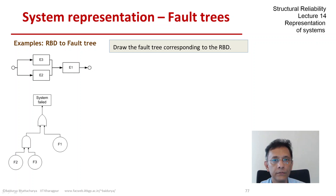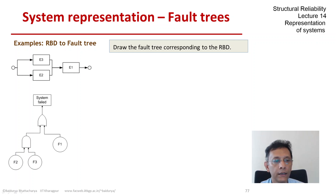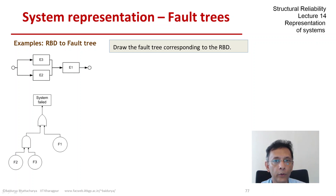So the top event is the system fails, and again because they are arranged in series, we have an OR gate. F1, which is failure of element E1, feeds into the OR gate, and F2 and F3, because they are in parallel, go through an AND gate and then go to the higher-level OR gate.